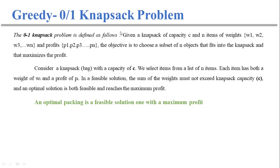There are two types of knapsack problems in greedy methods: one is the zero-one knapsack problem and the next is the fractional knapsack problem. In the zero-one knapsack problem, zero means we are not considering the item at all, and one means we are considering that item completely. It is defined as: given a knapsack of capacity C and N items with weights w1, w2, ... wn and profits p1, p2, ... pn, each item has its own weight and profit.